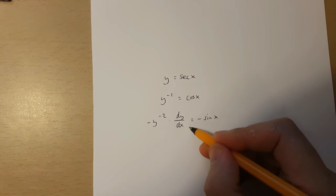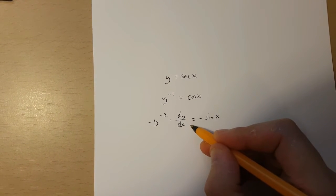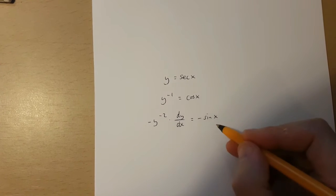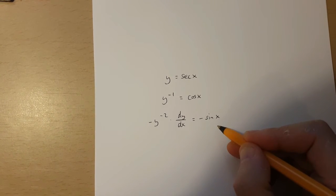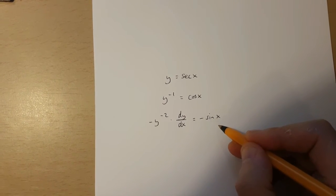Now to isolate dy over dx, I simply have to multiply both sides of this equation by minus y squared.